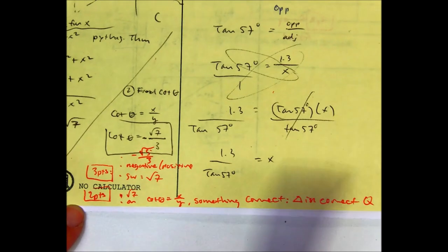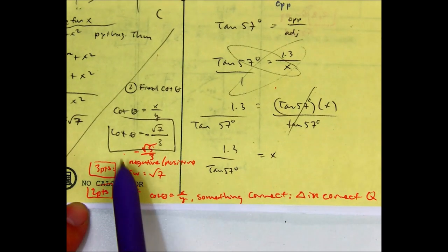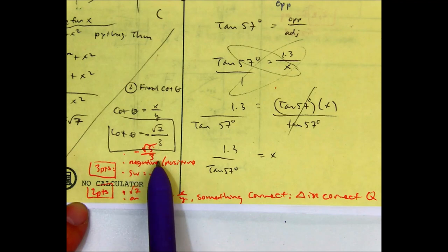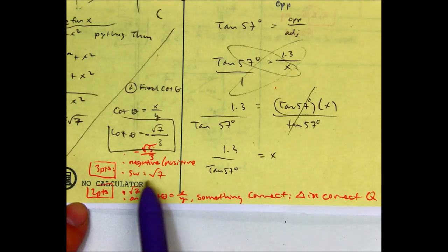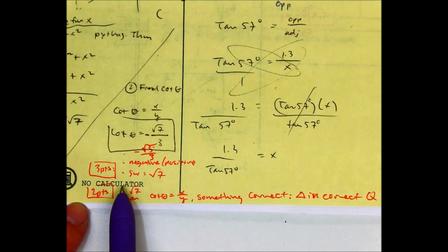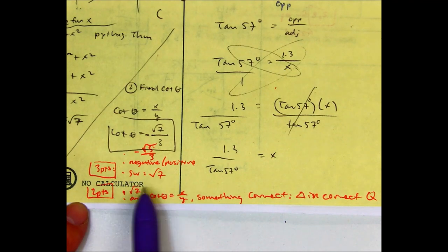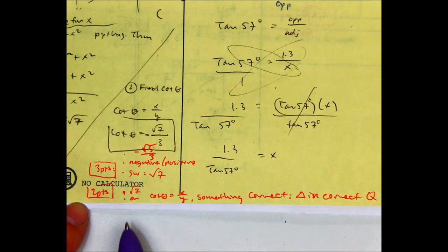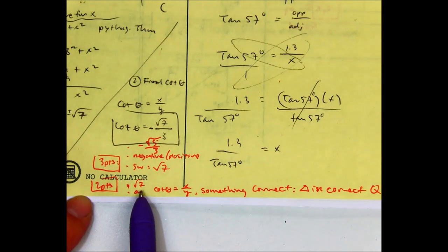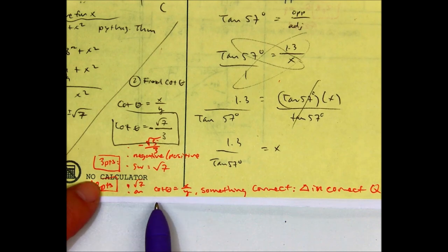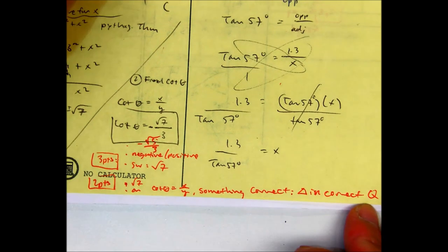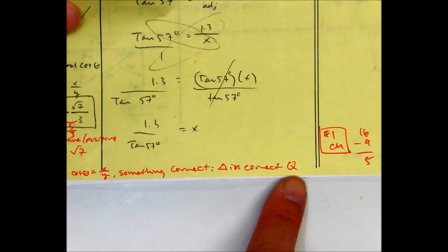I gave you 3 points if you wrote negative radical 5 over 3, or maybe if you wrote positive radical 7 over 3. Also, if you didn't show your work for radical 7, I took off a point. You got 2 points if you just wrote, got radical 7 but nothing else. Or maybe you knew it was going to be cotangent is x over y. Or if you drew your triangle in the correct quadrant, I gave you partial credit.